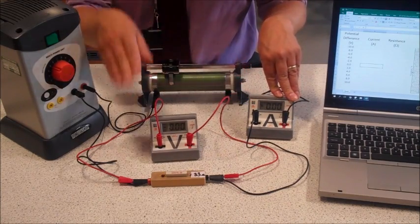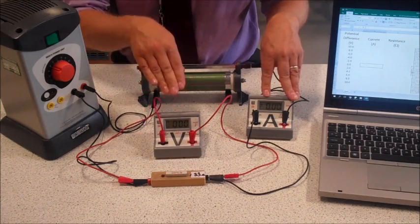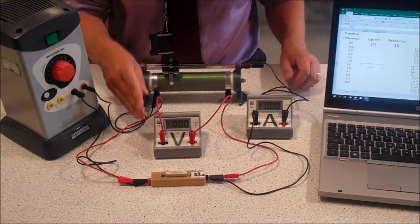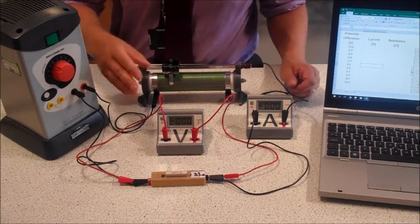For 0, 2, 4, 6, 8, and 10 volts, we will take a reading of current. And then we'll take some negative readings as well because you do need to know the shape of this current voltage graph for both positive and negative potential difference.